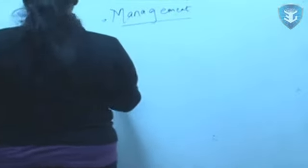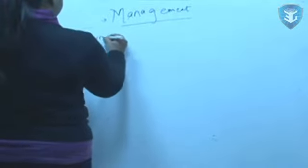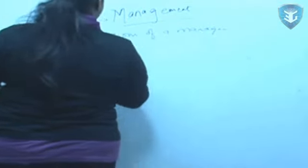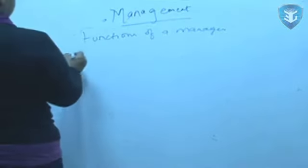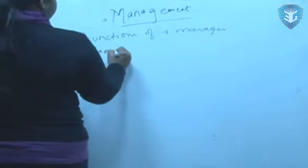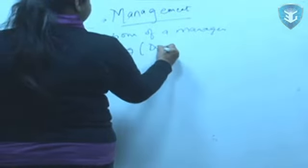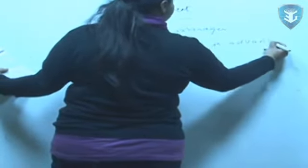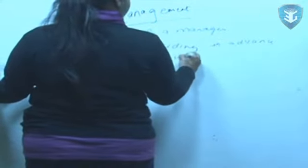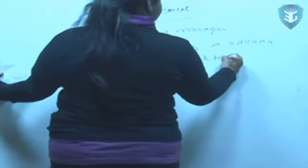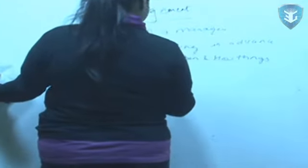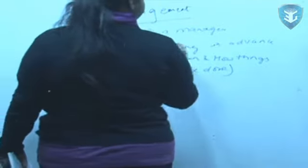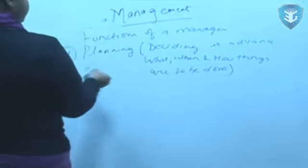After understanding the scope of management, let us specifically understand the functions of a manager means what all functions a manager needs to perform as part of his duty and responsibility. The very first function is planning. Planning is simply deciding in advance what, when and how things are to be done.